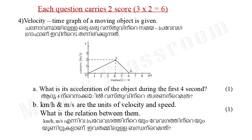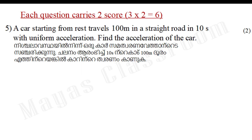What is the acceleration of the object during the first 4 seconds? That is 4 seconds — it will be 3 meters. Km per hour and meter per second are the units of velocity and speed. What is the relation between them?